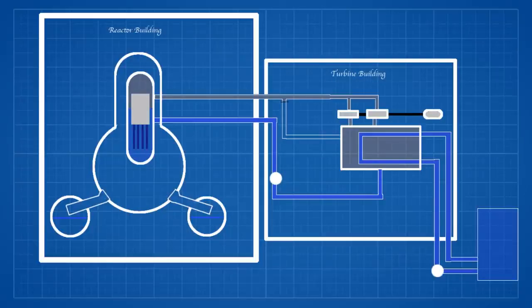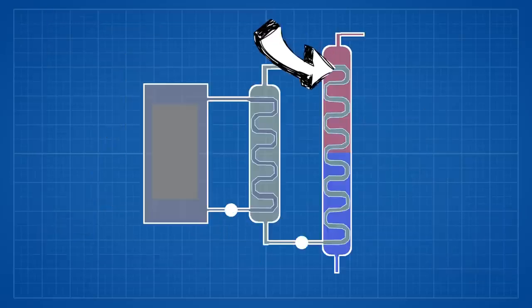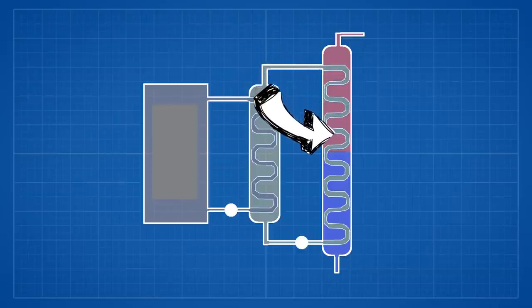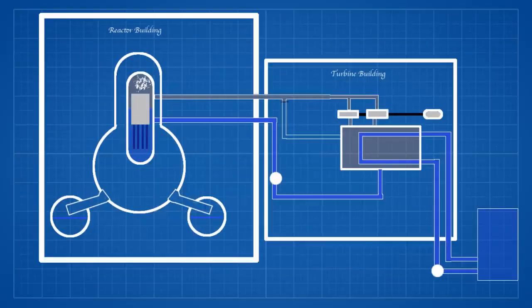A BWR design uses demineralized light water for both cooling and moderation, much like a pressurized water reactor. This type is the second most common after the PWR. However, unlike a PWR which uses a secondary coolant loop, in a BWR the boiling of the primary coolant creates the steam directly.